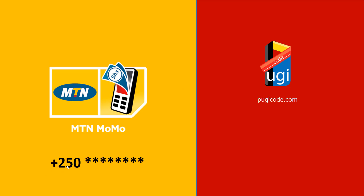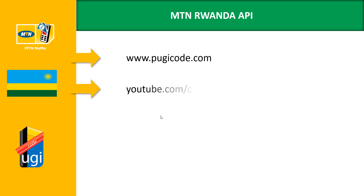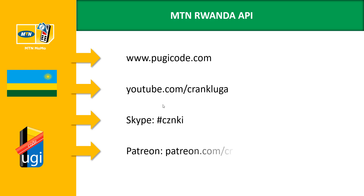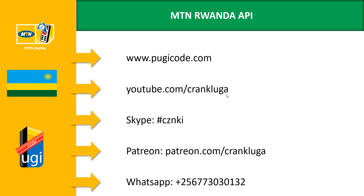The Rwanda API is running on country code 250. Our website is pogeecode.com. On YouTube, the channel is krankluga — that's where the videos are. You can find all the support I give on Skype, this is Nikki, and on Patreon if you want to support krankluga.